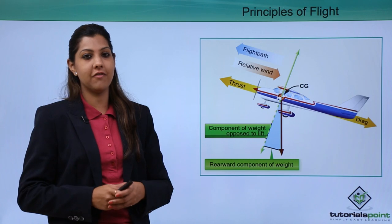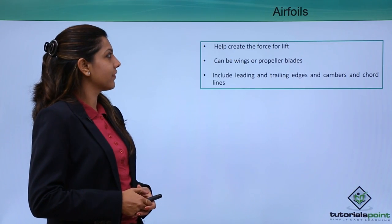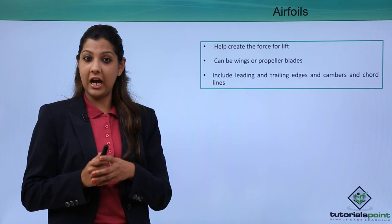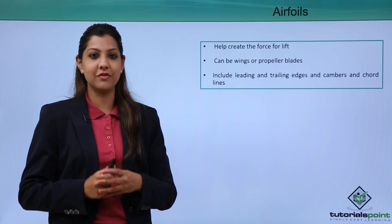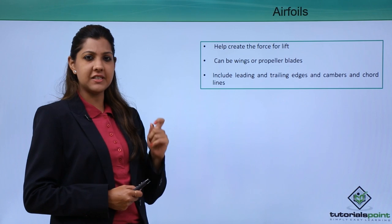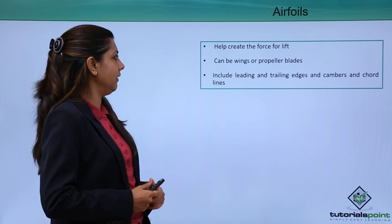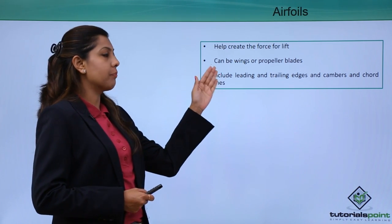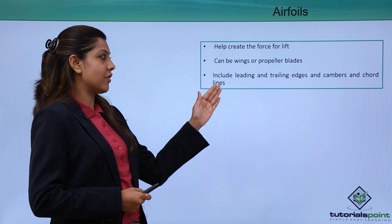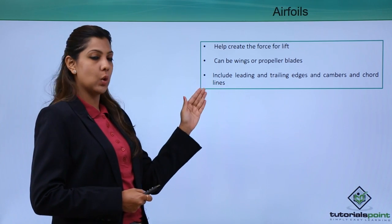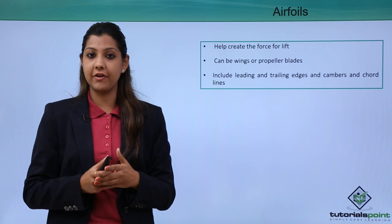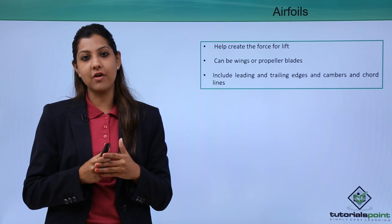Airfoils help create the force of lift. They can be wings or propeller blades, and they include leading edges, trailing edges, cambers, and chord lines. The leading edge is towards the nose of the aircraft, while the trailing edge is towards the aft or backside of the aircraft.